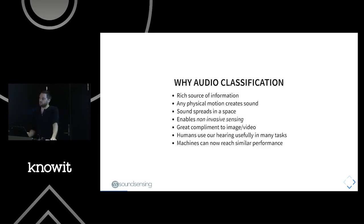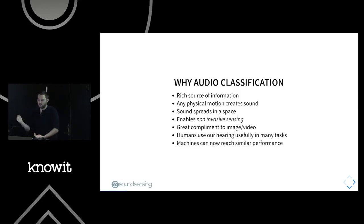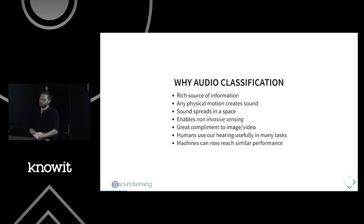If you work with manufacturing or machinery, good machinists usually have a very good ear. They can hear when something is not right, and sometimes they can even tell you exactly where inside the machine a particular problem is — which requires a lot of training. With machine learning, especially over the last five years, we can achieve near human-level performance. If we have the right data and the right way of modeling the problem, we can implement that expert machinist.